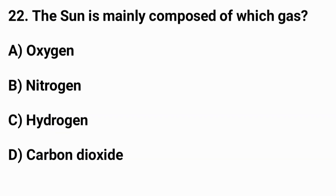Question number twenty-two: The sun is mainly composed of which gas? The right answer is option C — Hydrogen.